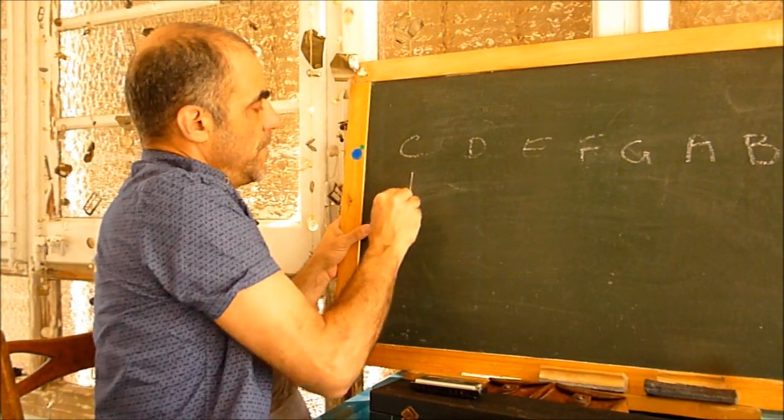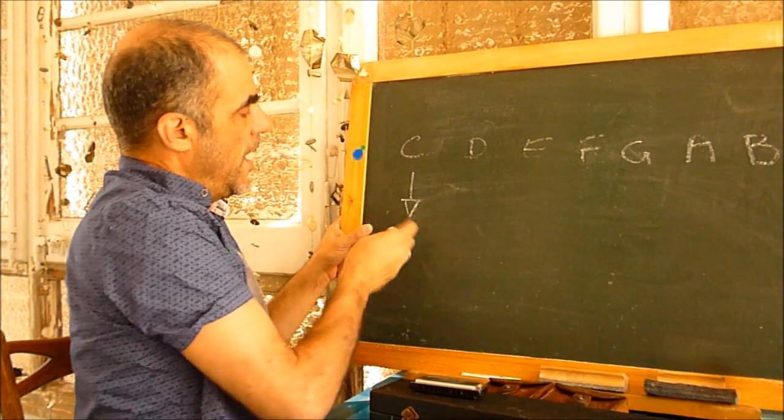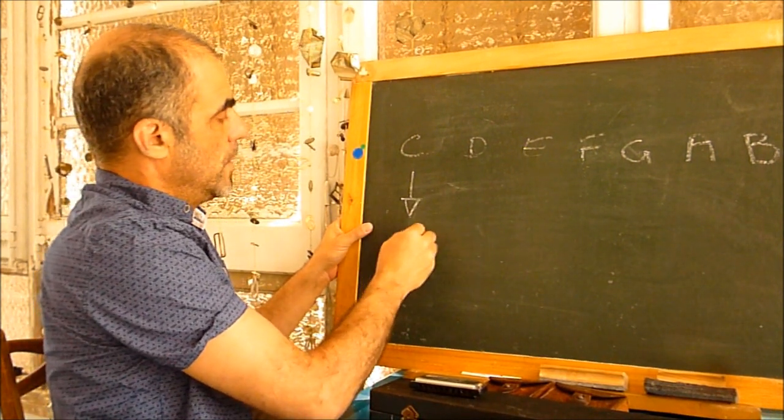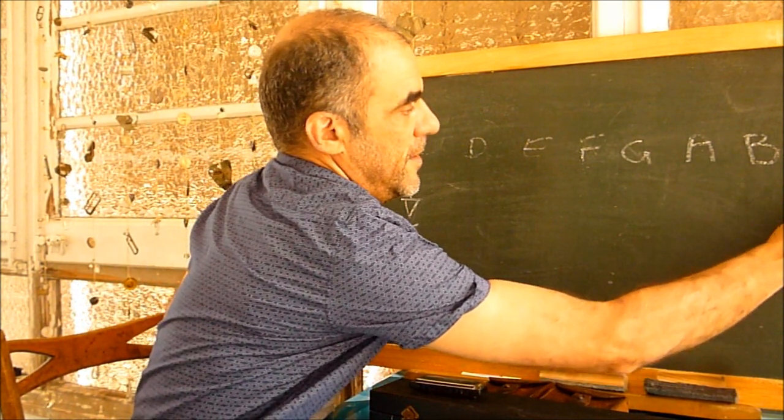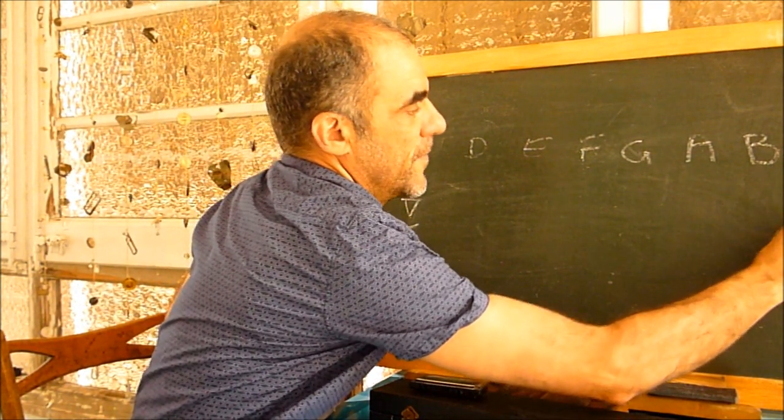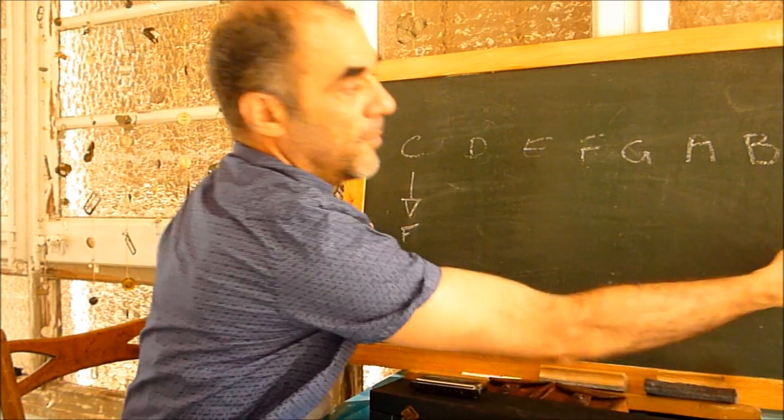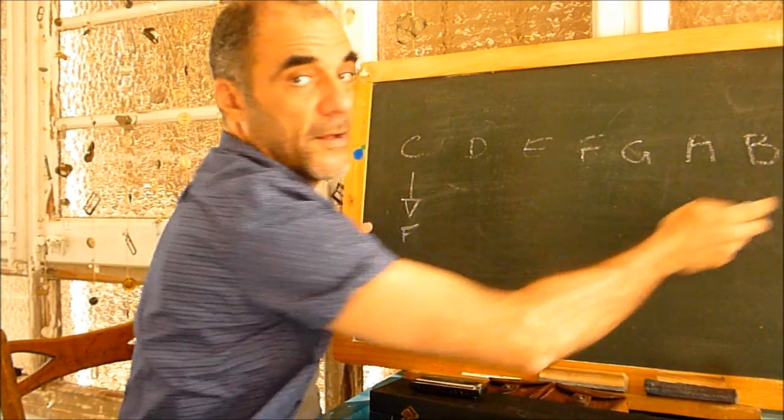This means, for example, that this C have a frequency we call it F, and the other C have a frequency which is 2F, the double, because it's higher.